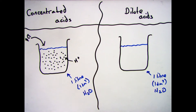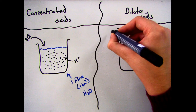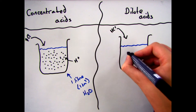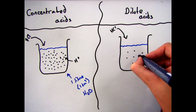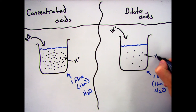If I go to a dilute one, there won't be as many in there. I've still got a litre of water — one decimetre cubed — but there are fewer hydrogen ions, therefore we class that as dilute.